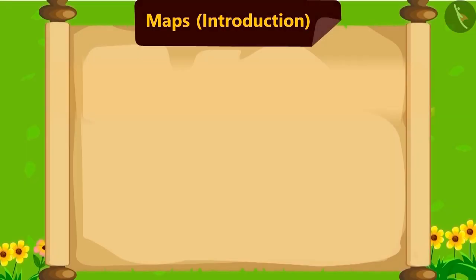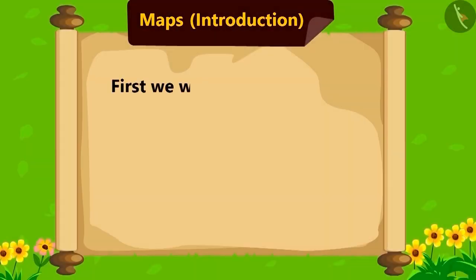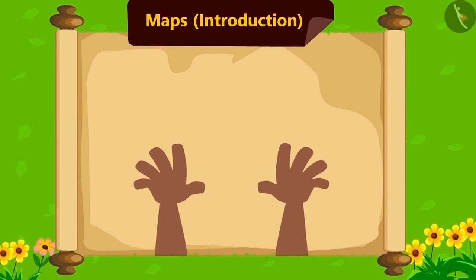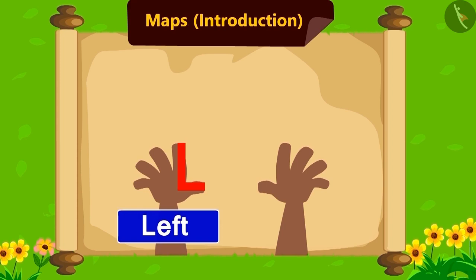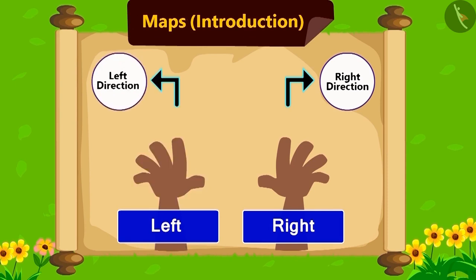Children, do you know how to identify the left and the right directions? First, we will learn to identify the right and the left hands. Keep your both hands like this. In whichever hand you see this type of L, that is your left hand. And the other hand is the right hand. The direction which is towards your right hand is the right direction, and the direction to your left hand is the left direction.